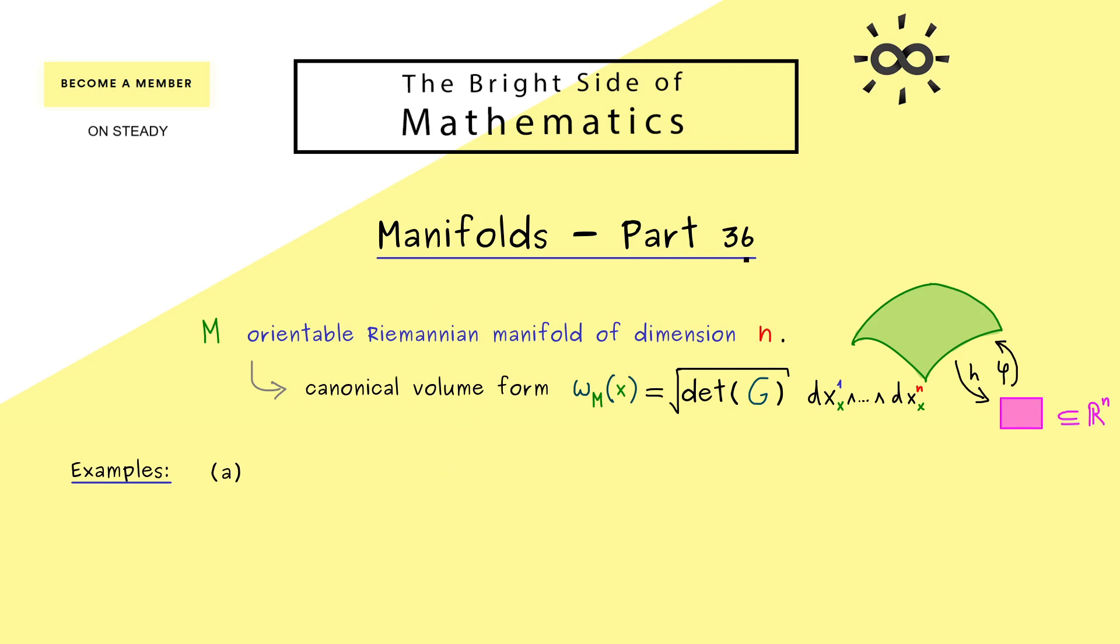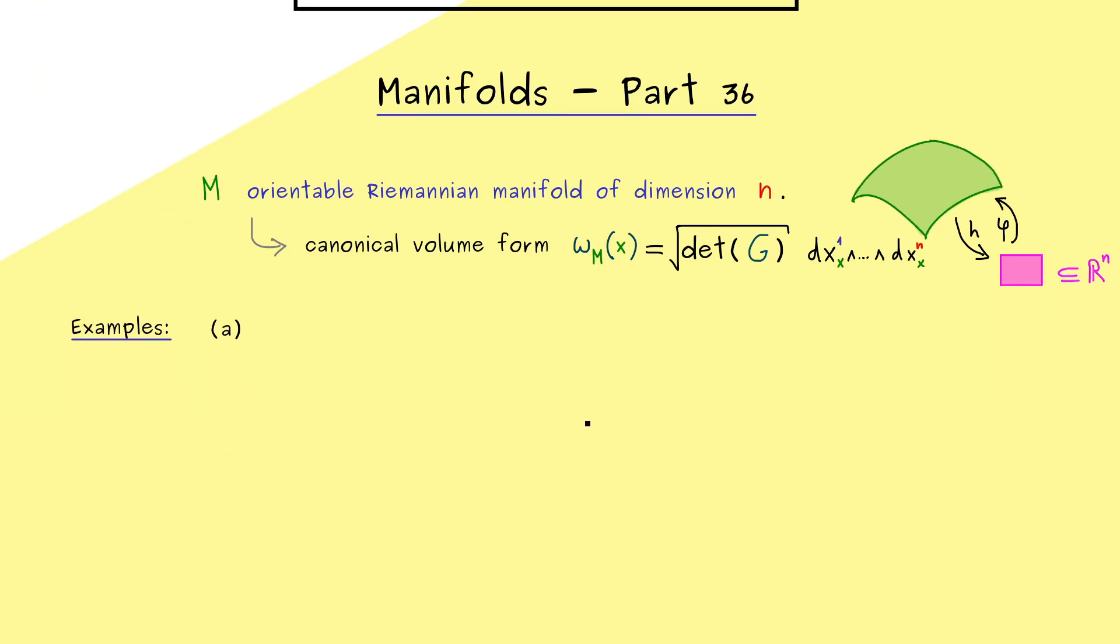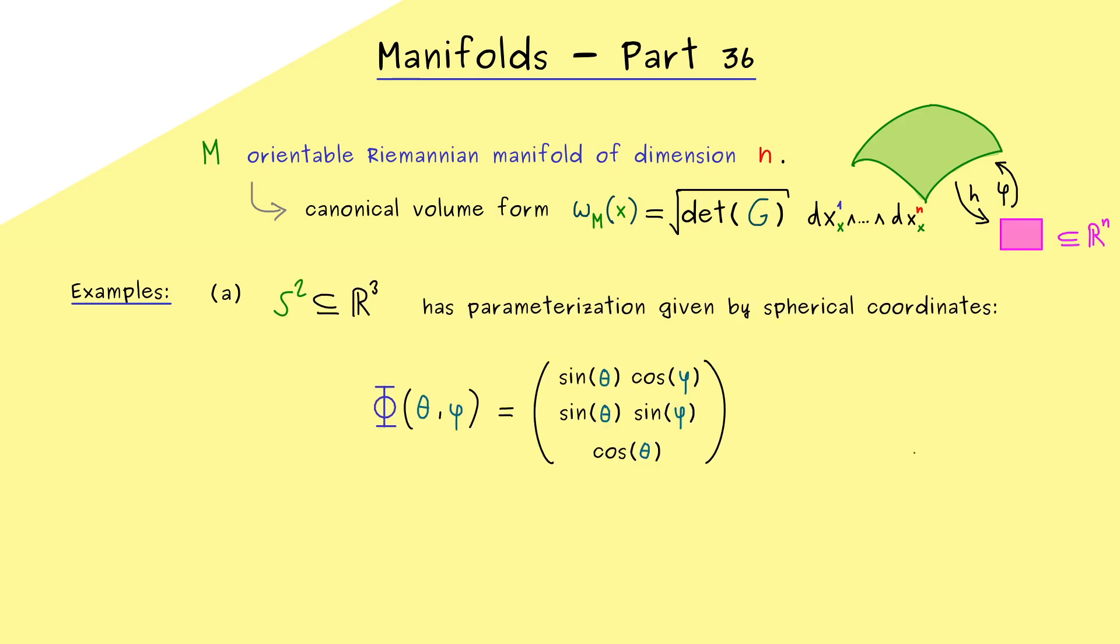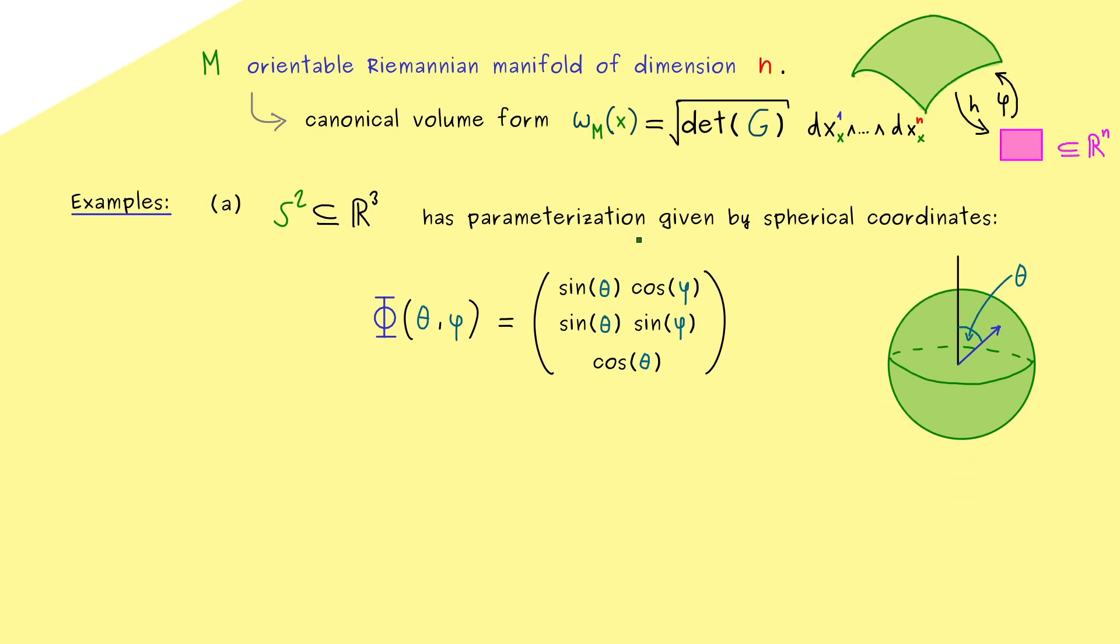In fact, in part 34 we already saw one example, so let's quickly recall that one. It was given by the common two-dimensional sphere with a standard parameterization. So we have the so-called spherical coordinates and they are denoted by capital Φ, simply because the lowercase φ is already used as an angle there. Indeed, what you should remember here is that we need only two angles to characterize a point on the sphere. And the angle θ here is measured from the north pole. And on the other hand, φ is measured as the angle on the equator plane here.